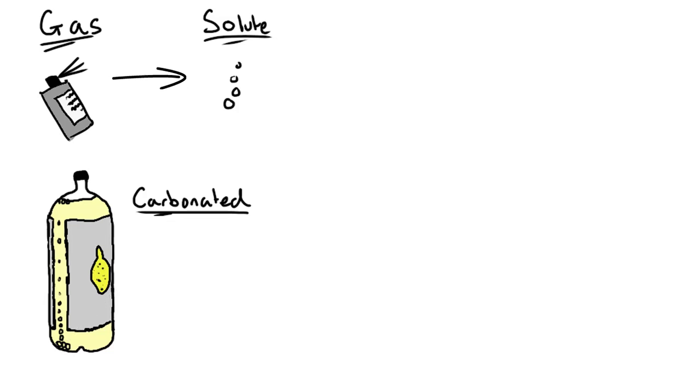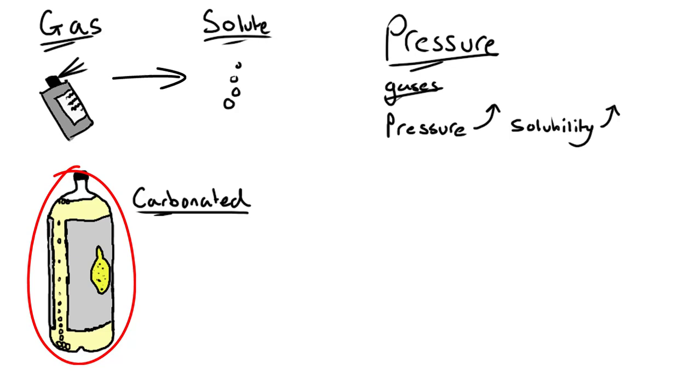The solubility of that CO2 is dependent on pressure. As the pressure of the volume of space above the lemonade increases, so does the solubility of that CO2. So when the lemonade is produced, the bottling process occurs under pressure, to keep as much of the fizz-creating CO2 in solution.